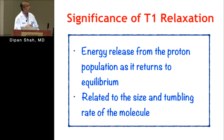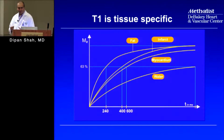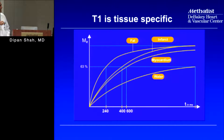This T1 relaxation is an energy release from the proton population as it returns to equilibrium, and it's related to the size and tumbling rate of the molecules. This property depends on the tissue: fat has a very fast rate of T1 recovery and therefore a very short T1 time. Water, on the other hand, has a very slow rate of T1 recovery and therefore a very long T1 time. Myocardium is somewhere in between.